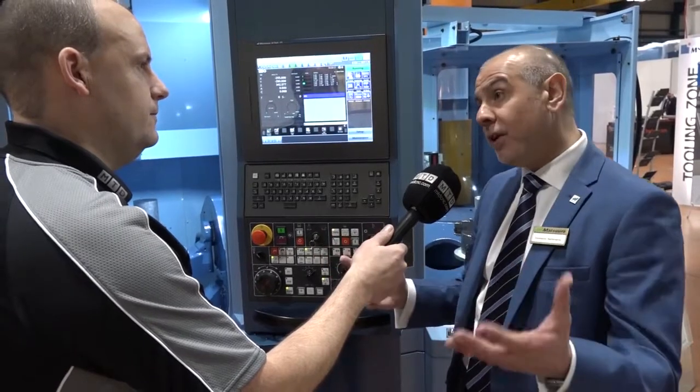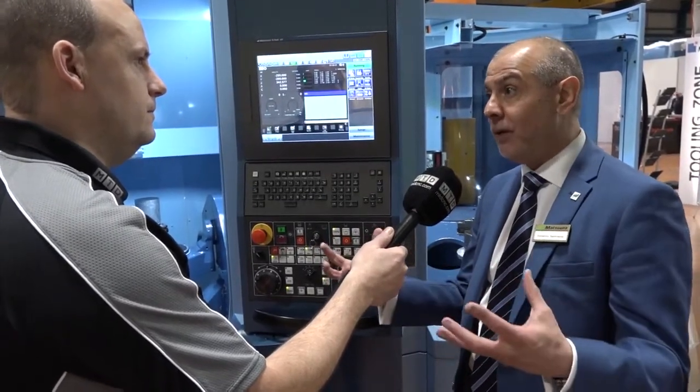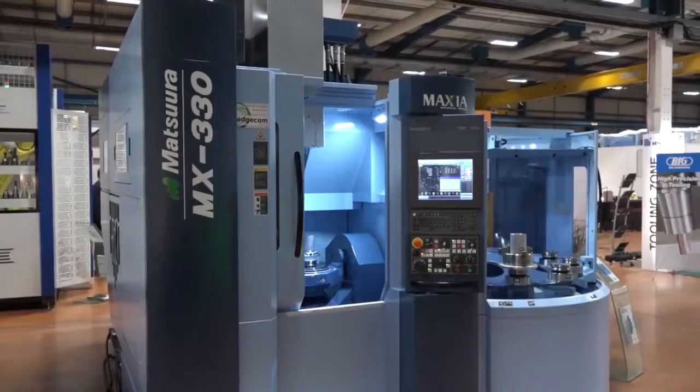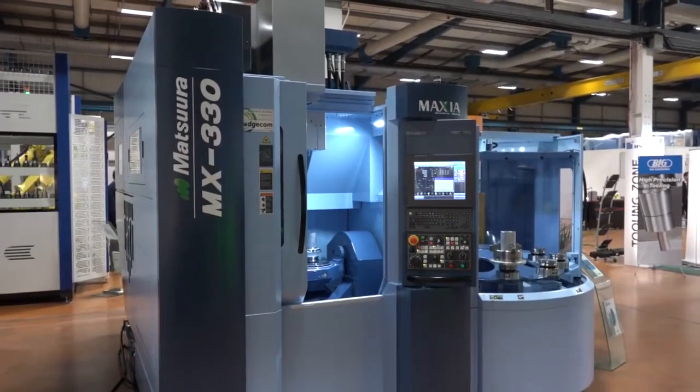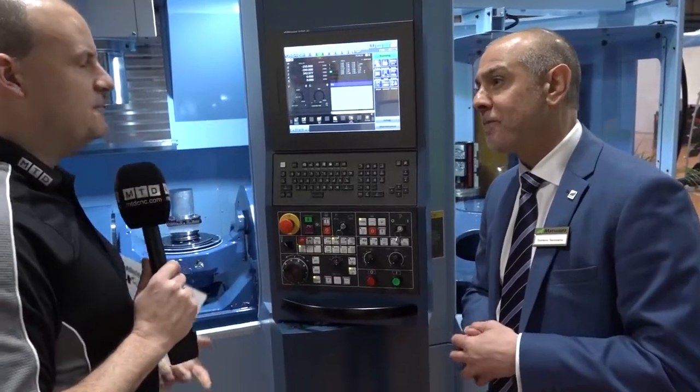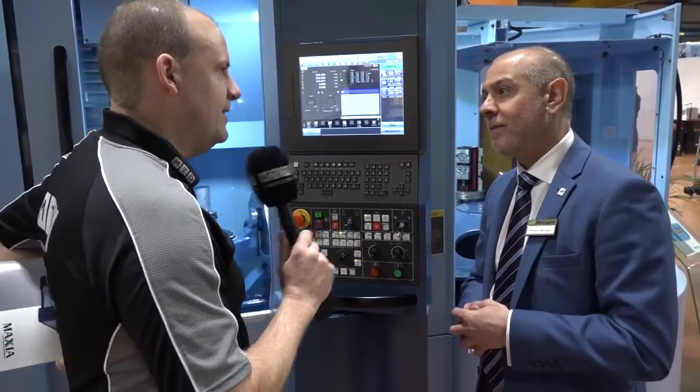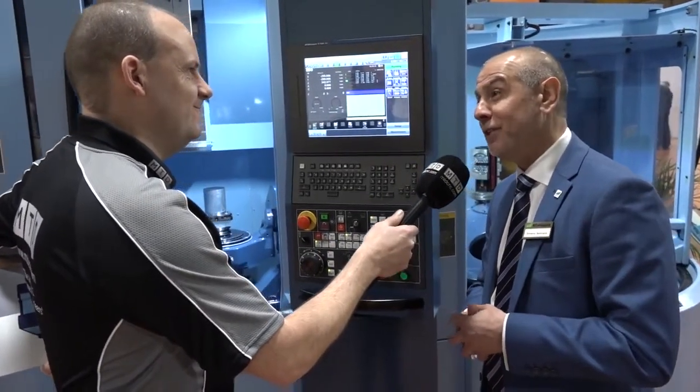So we've ended up at 90 tools and 10 pallets because we feel on this size of machine, the size of footprint, it's an affordable package that gets you into Matsuura automation. And that MX520 has been a massive hit for Matsuura. Is this going to be the same for you in the UK? I think this is going to be bigger, personally. I really do.